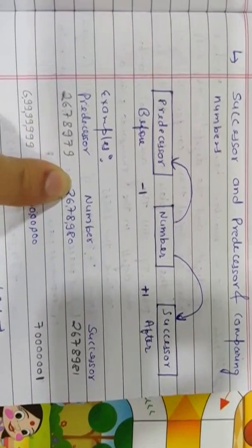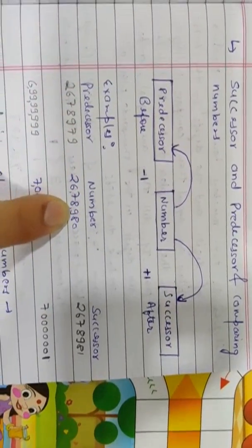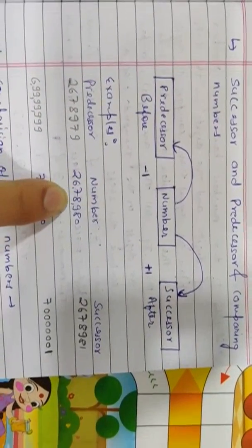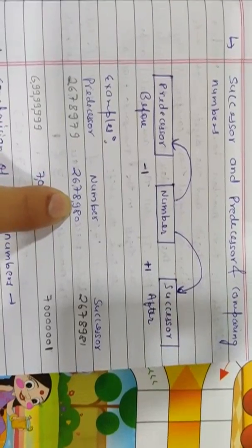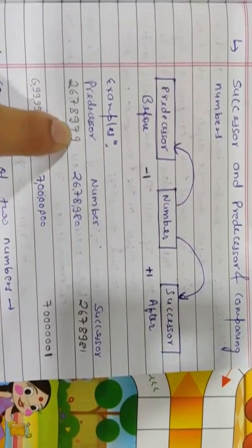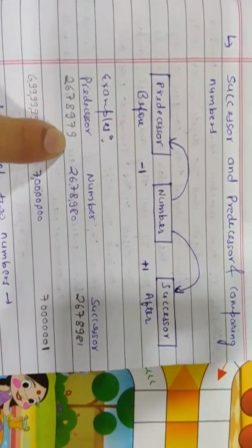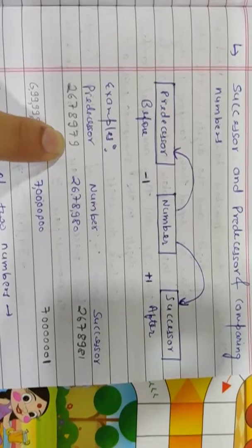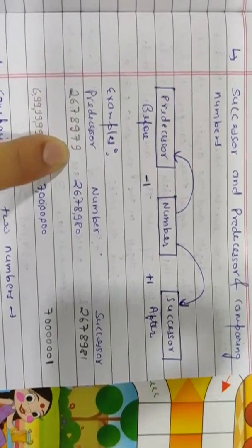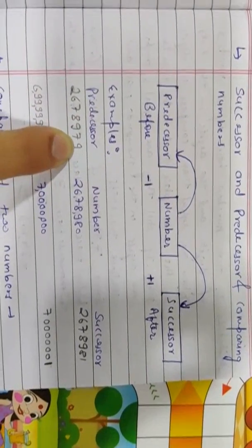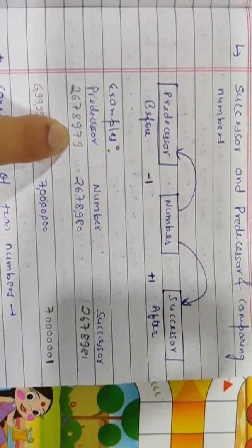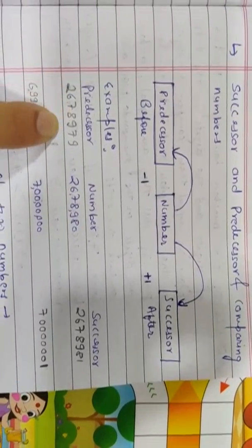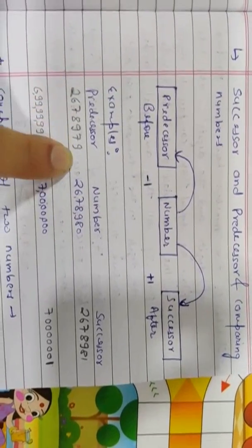Now let's talk about predecessor. From the same number, 26,78,980 minus 1 gives us 26,78,979. So the changes will be here only on the unit place and tens place — the ones place and tens place. 26,78,980 minus 1 means 26,78,979.